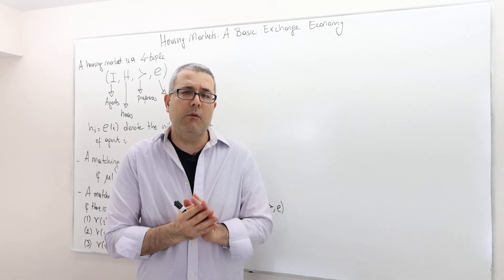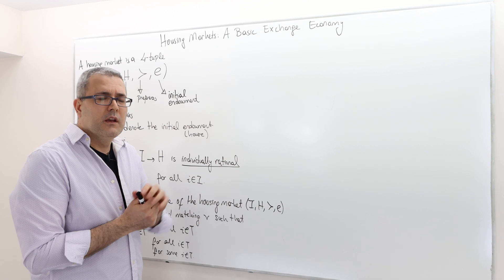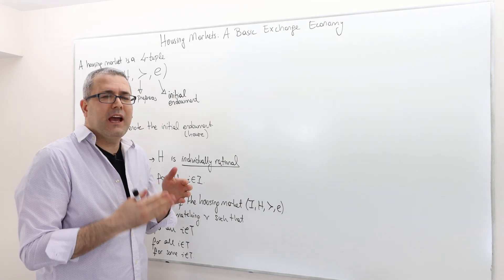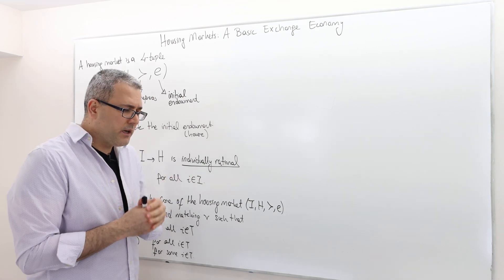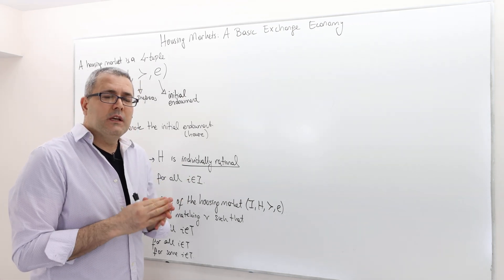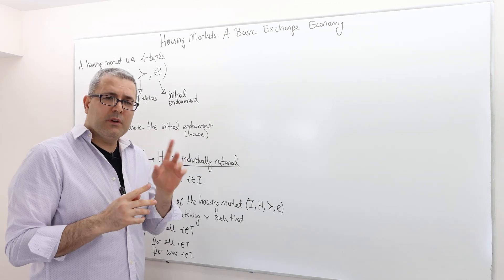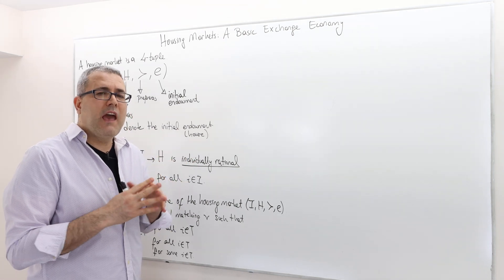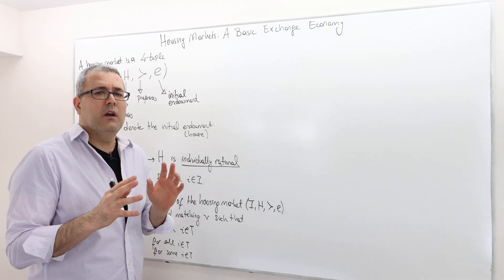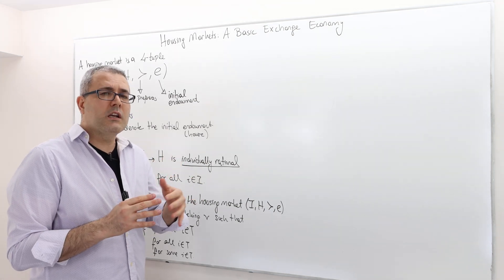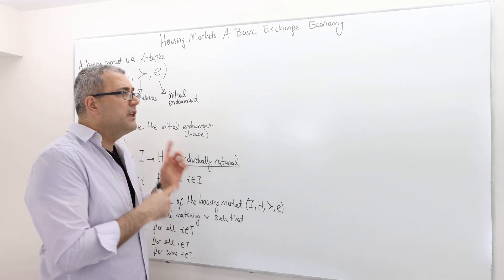In this episode, I'm going to talk about a housing market. How is this different than the house allocation problem? This is a market where each individual is endowed with a house. Remember, in the house allocation problem, everybody is kind of a new tenant — nobody has a house — and so individuals are going to be assigned a house for the very first time.